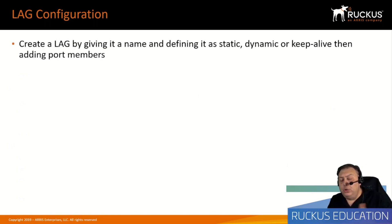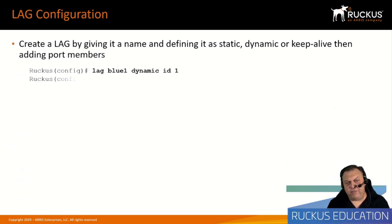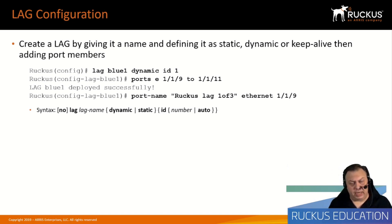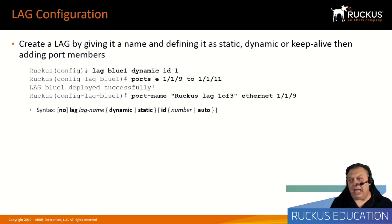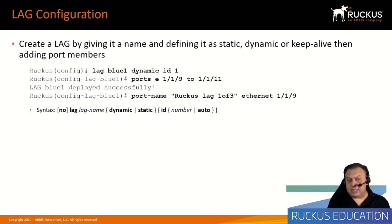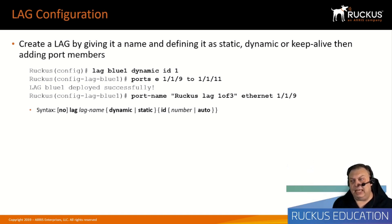LAG configuration — which you would have already seen in the ICX 150 course — involves creating a LAG by giving it a name and specifying whether it is dynamic, static, or keep-alive. Keep-alive LAGs will be discussed further in module three of this self-paced course. You then add one or more ports into the LAG — for example, ports 9, 10, and 11 to create a three-port link aggregation group. You can also name the member ports to match any port naming convention in your environment.